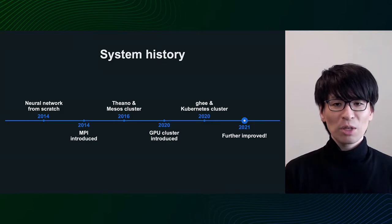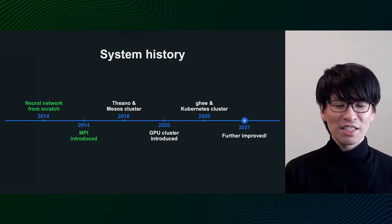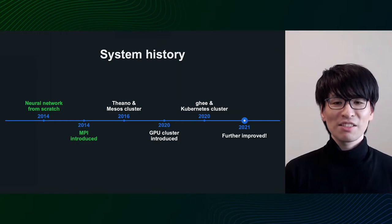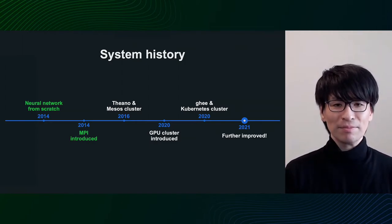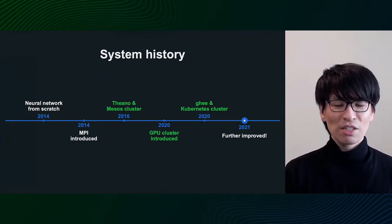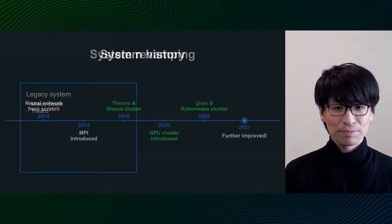Now, let's take a brief look at the history of the user persona system. The first step was to implement a neural network code from scratch. Later, in order to handle large-scale data, a parallel processing mechanism using MPI was introduced. After that, full-fledged deep learning and machine learning were introduced, and the next slide will show the transition.